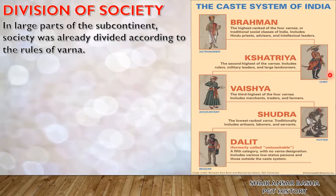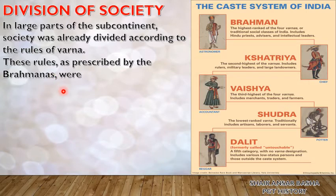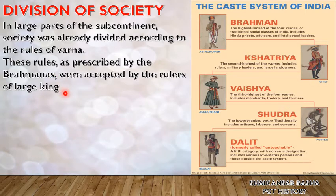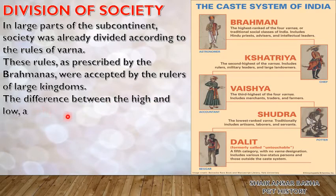According to the Dharma Shastras, Brahmanas were created from the mind of Brahma, Kshatriyas from the shoulder of Brahma, Vaishyas from the thigh of Brahma, and Shudras from the feet of Brahma. These are the four important divisions. Dalits are also there but they are untouchables — the lowest category of the caste system. These rules as prescribed by the Brahmanas were accepted by rulers of large kingdoms.